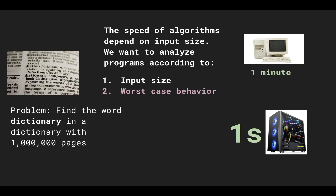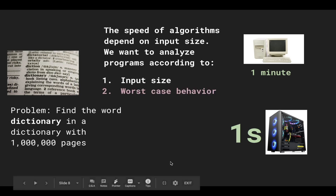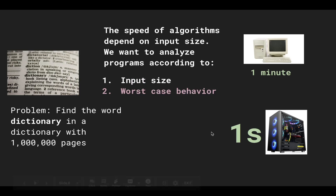We want to consider the worst case because when you have users on the other end of your software, worst case behavior is what matters, not the best case. It's great that the gaming computer found 'Apple' in one second, but we still want to ask: what's the worst case these two algorithms can ever perform?